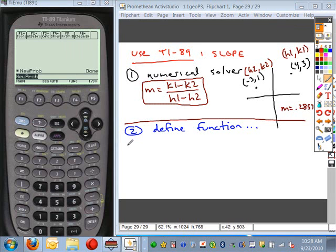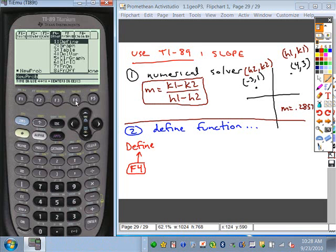We're going to define a function and we'll call it slope. So step one is to choose define. Define is located under the F4 tab, other, and then just choose the word define. That tells your calculator you're going to define an equation or function.